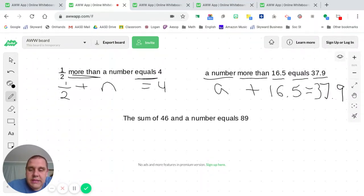Last example. The sum, we know that the sum is the answer to an addition problem, of 46 and a number equals 89. So obviously equals 89, that's an easy part. The sum of, sum means to add. So 46 and a number. How about B? 46 plus B equals 89. So those are three good algebraic equations to look at for addition.